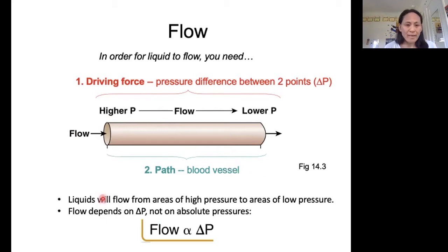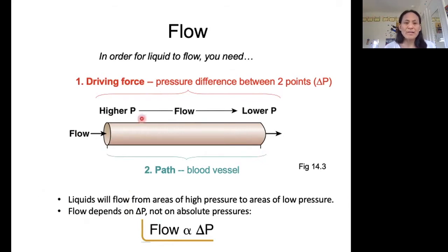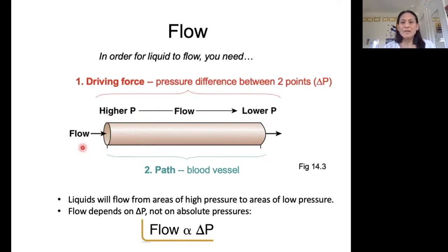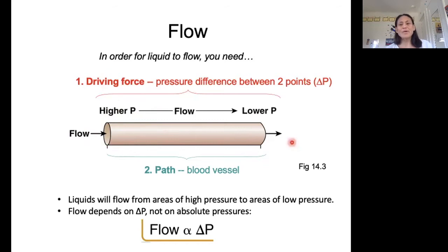Liquids are going to flow from high pressure to low pressure. Also, flow is going to depend on the pressure difference, not the absolute pressures. So if you have a 20 millimeter of mercury difference between this location and this location, that's going to be the driving force for the movement of blood. It's not going to matter what the actual values of the pressure are here or here.